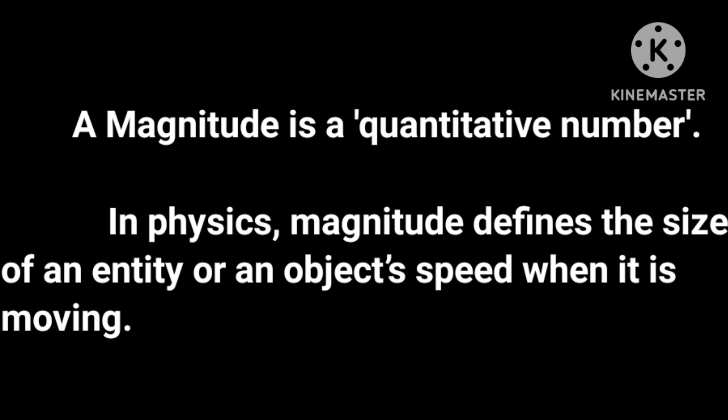In physics, magnitude defines the size of an entity or object speed when it is moving. So what is the meaning of object? Object is in the moving position. Object is in the speed of magnitude.